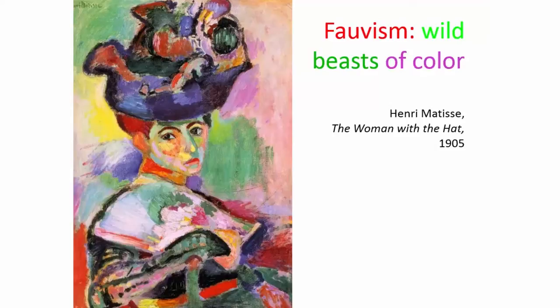One of the leaders of the Fauvist movement was Henri Matisse, and the work we are looking at now is his Woman with the Hat, which shows a woman with unnatural colours. It's not very three-dimensional. There's some illusion of space, but we already see artists wanting to make art that is very flat and consists of mostly shapes and colour.